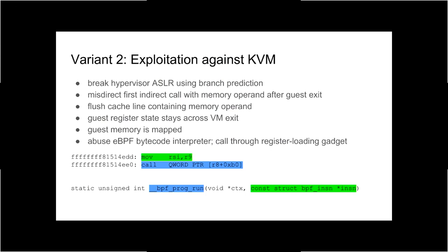I wrote a proof-of-concept for this against the KVM hypervisor. The basic idea is: first, break the hypervisor ASLR using branch target buffer leak of address information as shown in prior research. Then misdirect the first indirect branch that occurs after a guest exit — when switching from the guest back into hypervisor context — and flush the cache line containing the memory operand to the indirect call so that call takes a couple hundred cycles to resolve, during which you get transient execution at an arbitrary address.